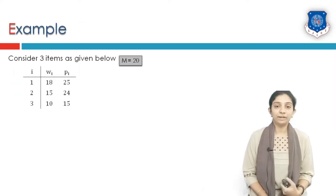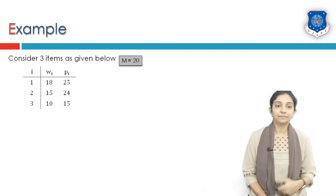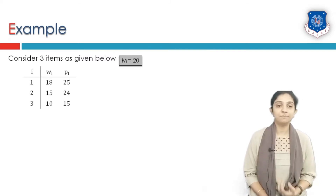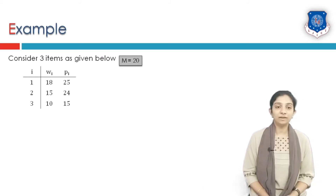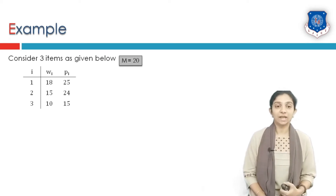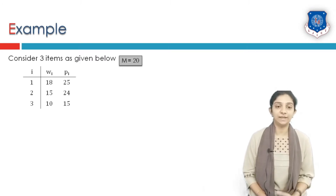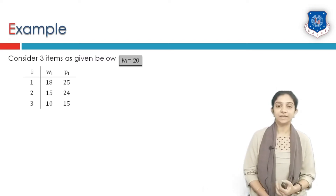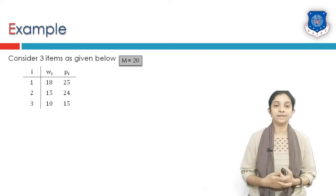Let us see the knapsack problem solved using backtracking with an example. We have a list of three items where each item's weight and profit is mentioned in a table. Item 1 has weight 18 and price 25, item 2 has weight 15 and price 24, item 3 has weight 10 and price 15. The capacity of the knapsack is 20.